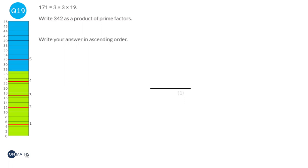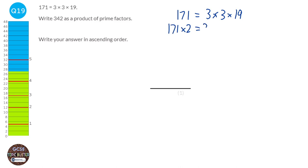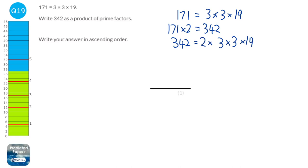We know that 171 is 3 times 3 times 19. Comparing 171 with 342, we know that 171 times 2 is 342. So 342 has the same prime factors as 171 — 3 times 3 times 19 — but also includes a factor of 2. So the answer is 2 times 3 times 3 times 19.